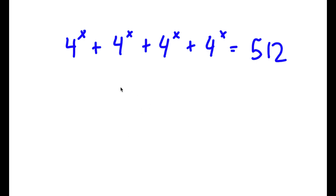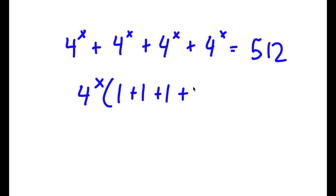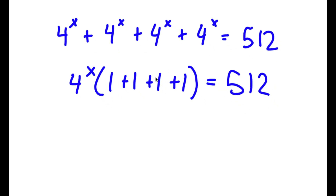In this problem, I have 4 to the power of x plus 4 to the power of x plus 4 to the power of x plus 4 to the power of x is equal to 512. To solve this, I'm going to first start by factoring out 4 to the power of x. So now I have 4 to the power of x times (1 plus 1 plus 1 plus 1) is equal to 512. I'm going to rewrite 1 plus 1 plus 1 plus 1 as 4, so I have 4 to the power of x times 4 is equal to 512.